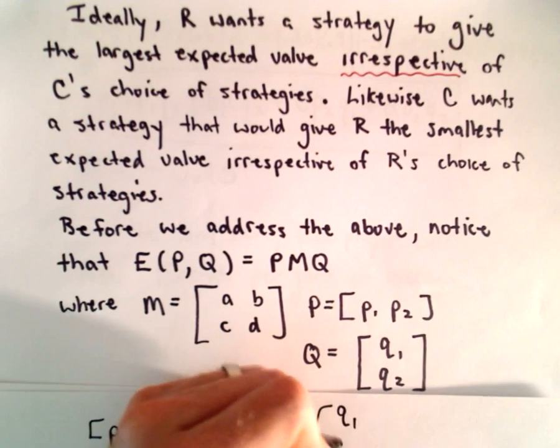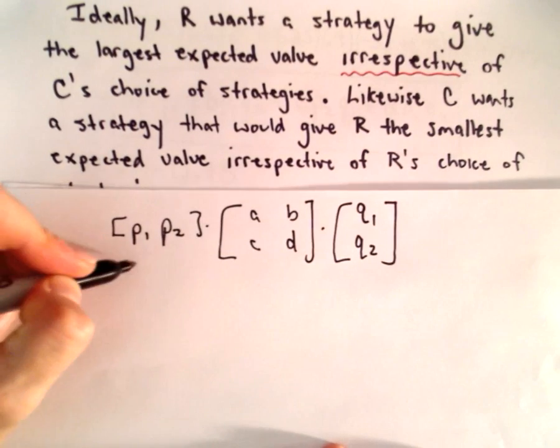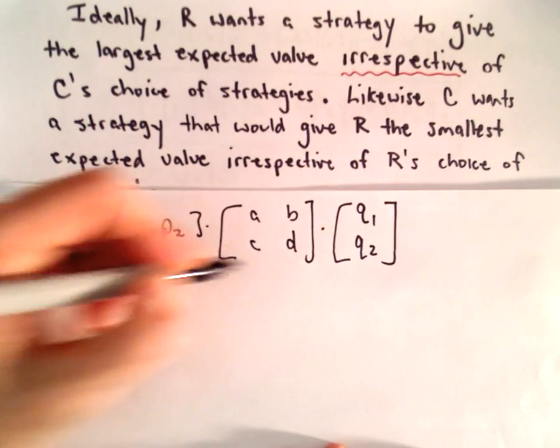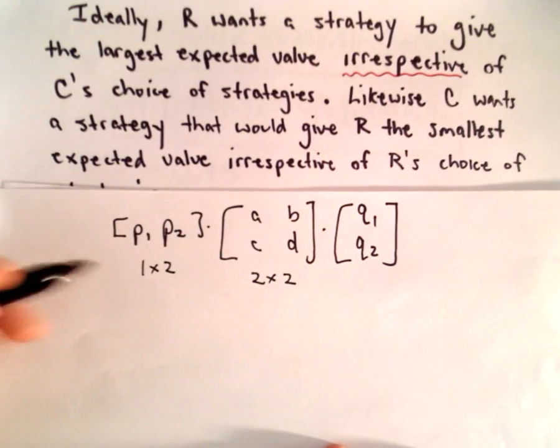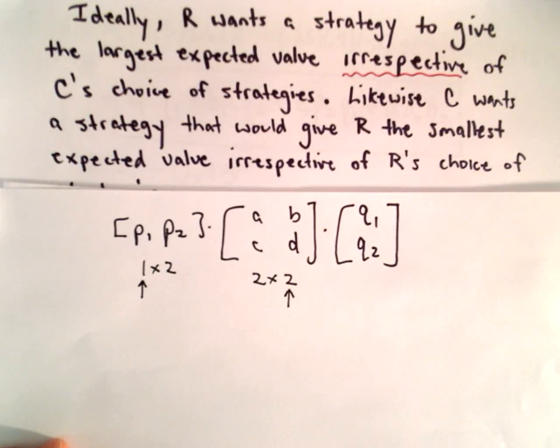And then we're going to multiply that by Q1 and Q2. Notice our first matrix here is a 1 by 2 matrix. Our second one is a 2 by 2 matrix. So if we multiply those together, we'll end up with a 1 by 2 matrix.